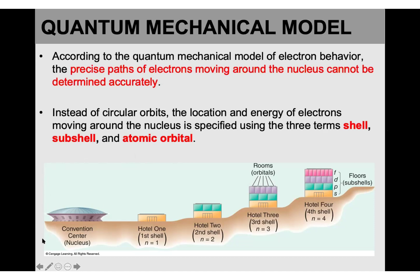If you look at this convention center — which we assume is the nucleus — hotel one is the one closest to the nucleus, which is level one or shell one. Hotel two is a little bit further from the nucleus, so we call it shell two. Hotel three is shell three, hotel four is shell four, and so on. Because we have seven periods in the periodic table — seven horizontal rows — we can fill up to seven shells around the nucleus. Each of these is one shell.